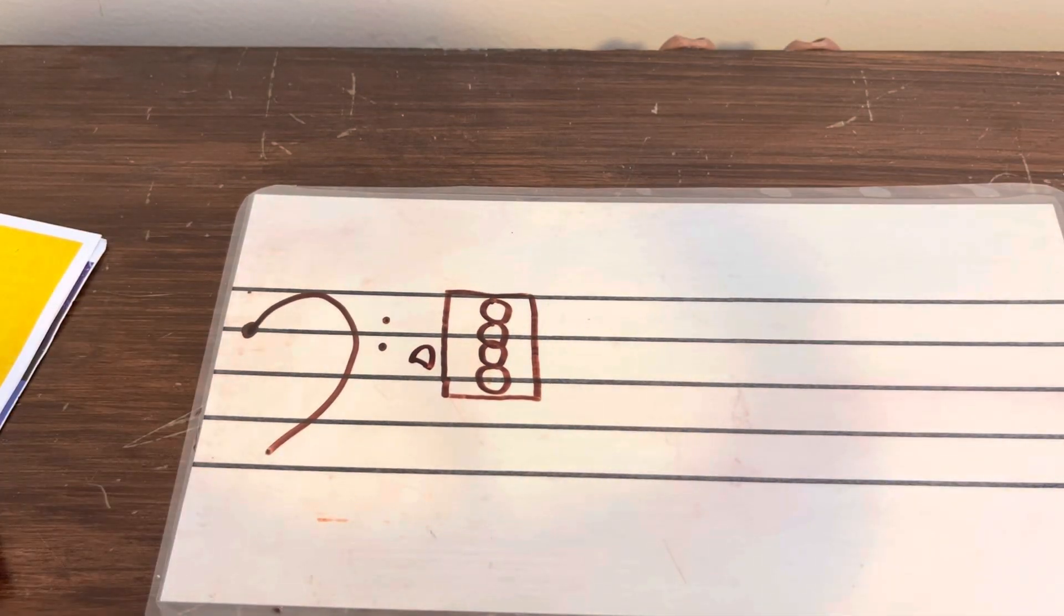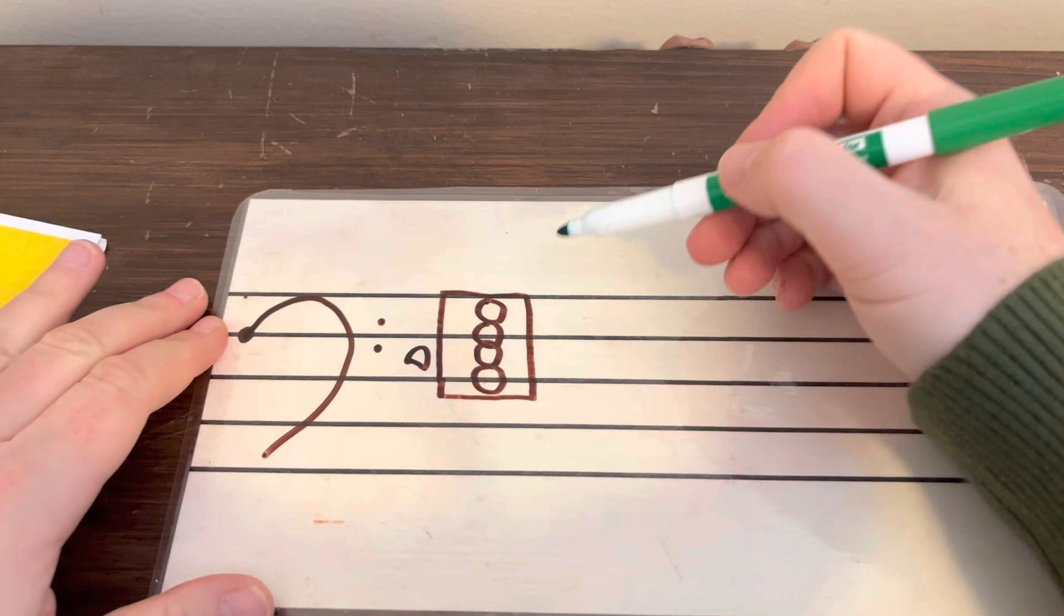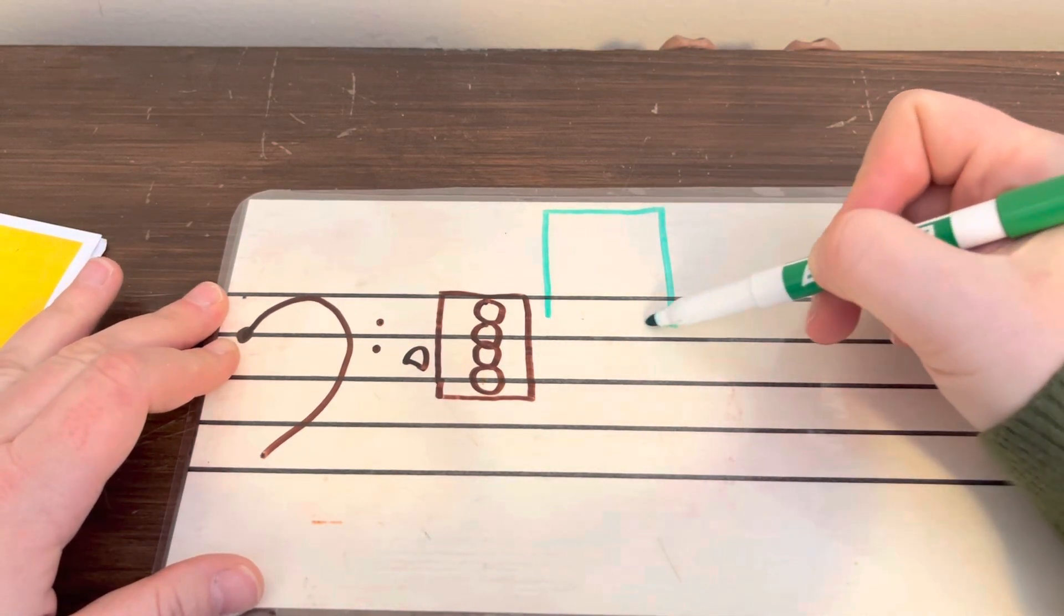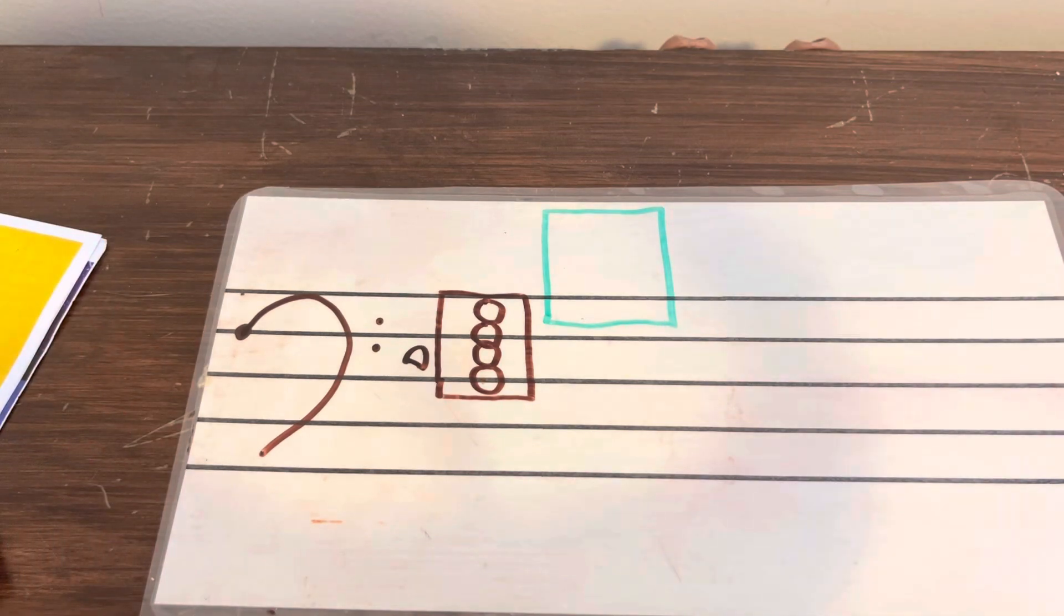So our A string is the next highest string. It's our highest string. And so those notes are going to be higher on the music staff. They are your highest. And so they are going to be up here above the music staff. I'll use a different color that you can see a little bit better. Let's try red.